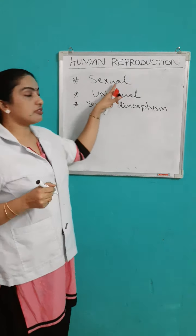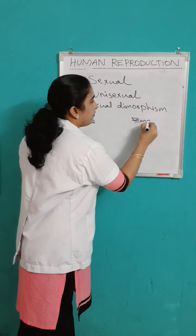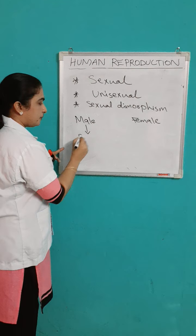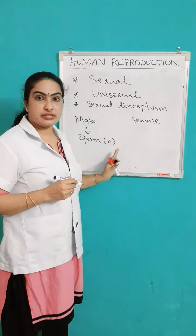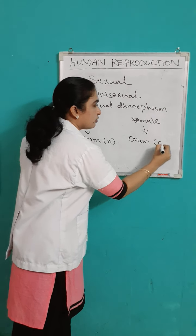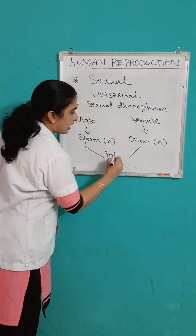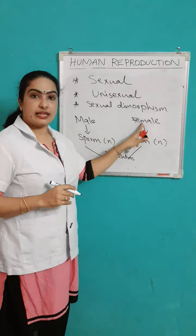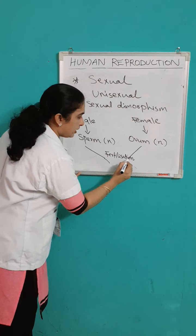In case of sexual reproduction, both male and female parents are involved in the production of young ones. The male parents produce the male gamete, which is sperm, and which is haploid in nature. In case of the female gamete, which is ovum, that is also haploid in nature. And there is a fusion of both male and female gametes, and the process is known as fertilization.